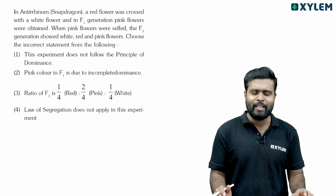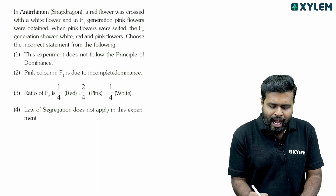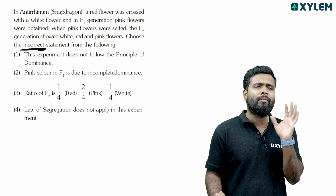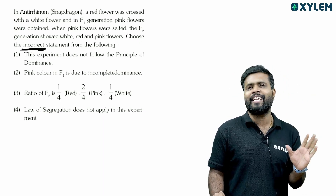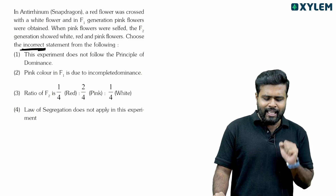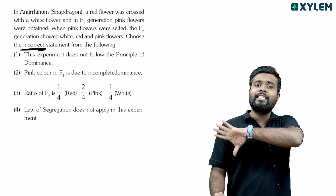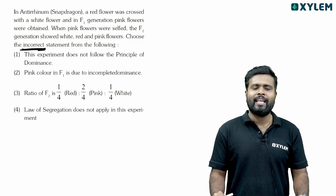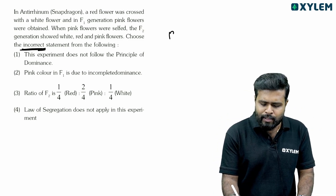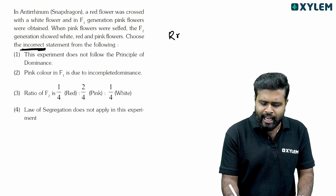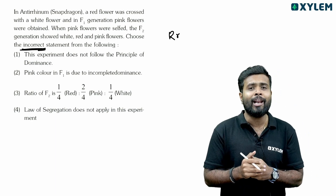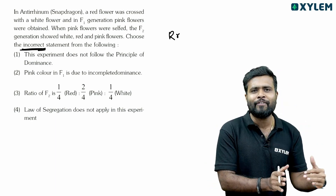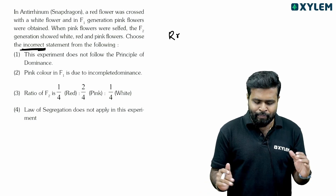Choose the incorrect statement from the following. This experiment does not follow the principle of dominance. If it comes to capital R and small r, capital R is expressed, so there is dominance. But if you follow it here, it is not.